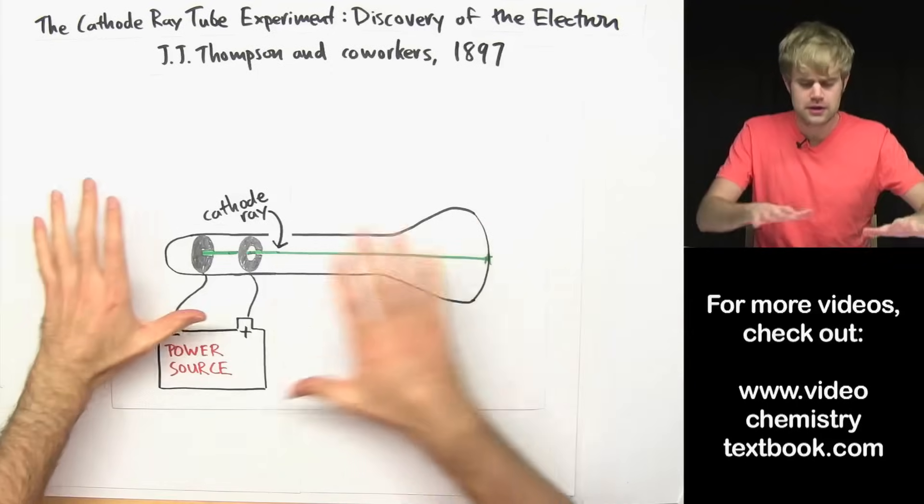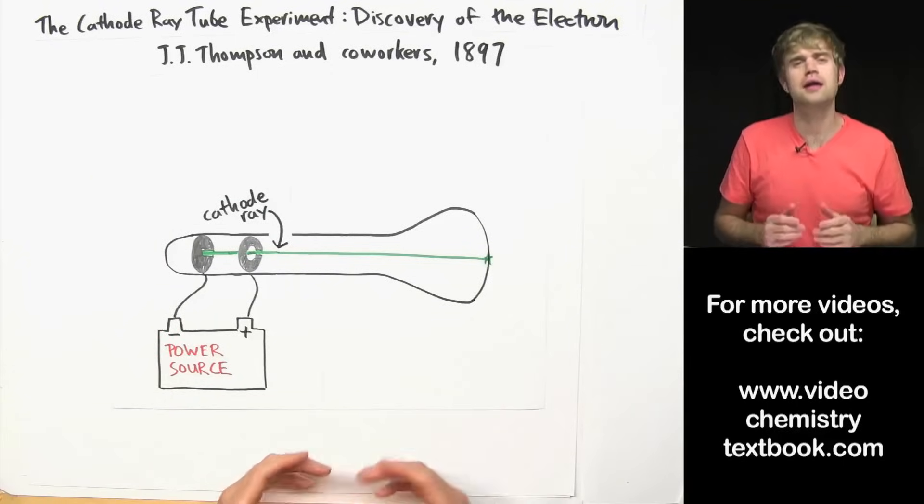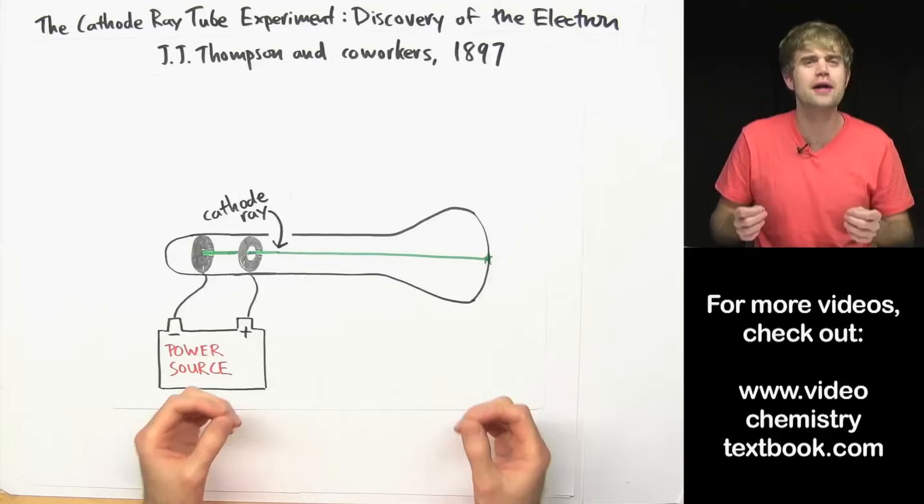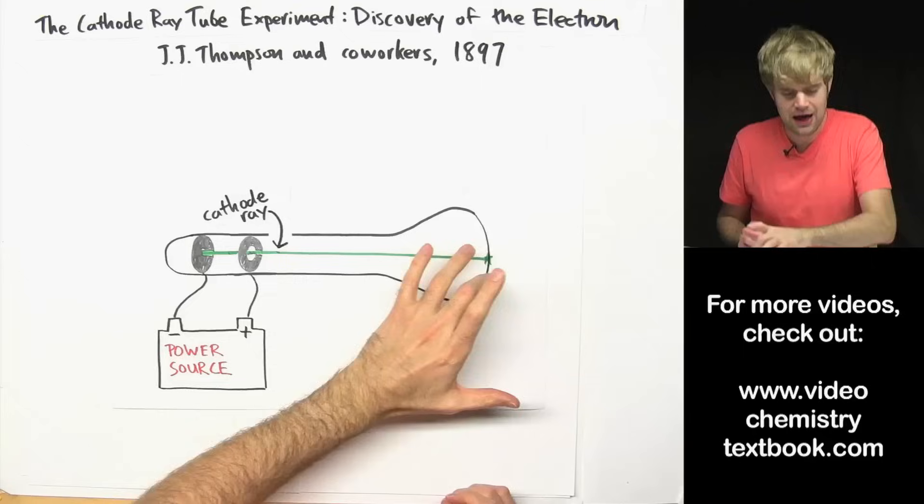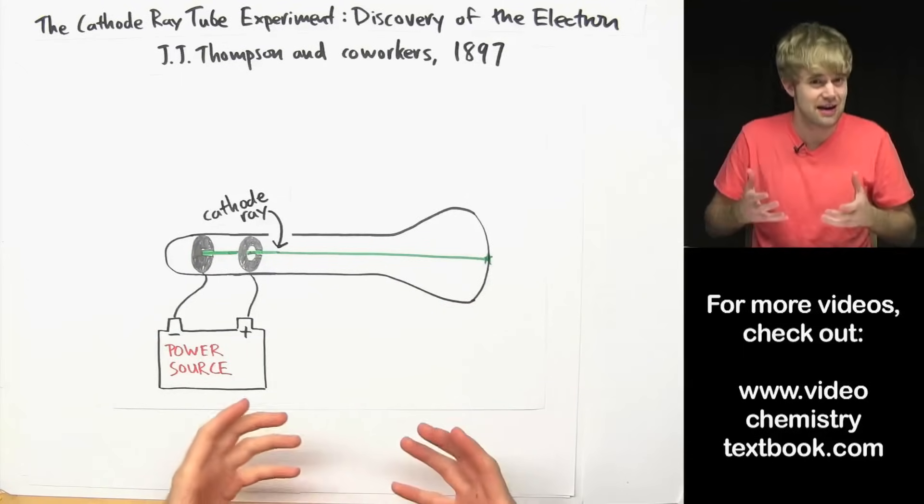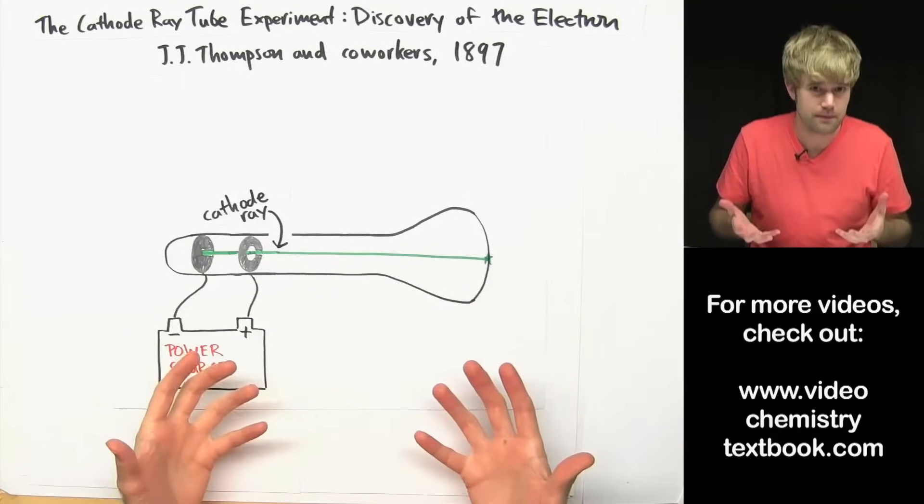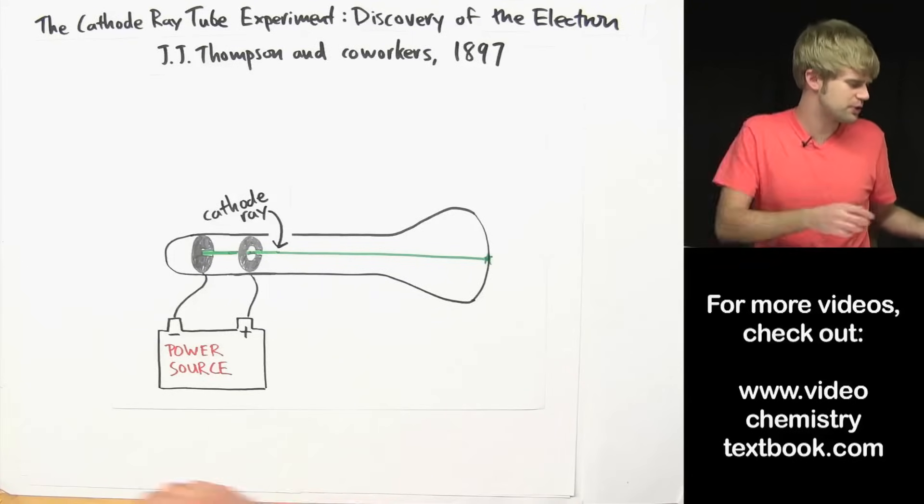Anyway, Thompson sees this ray and he gets curious as to what it's made of. And so he asks the question, the stuff that the cathode ray is made of, does it have an electrical charge? And here's how he attempts to answer that question.